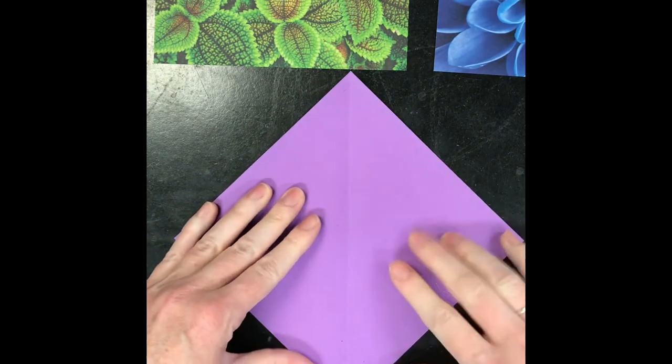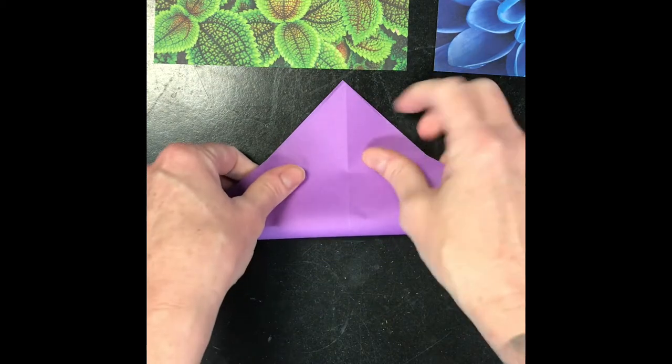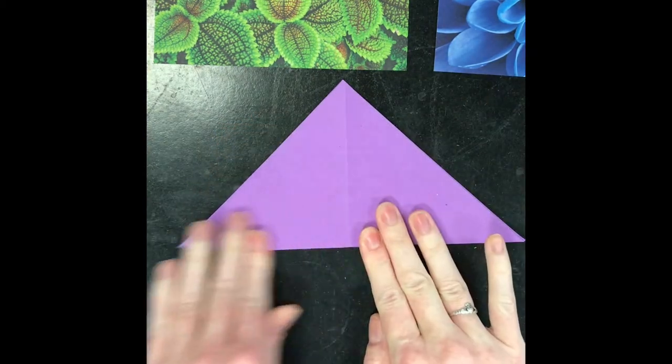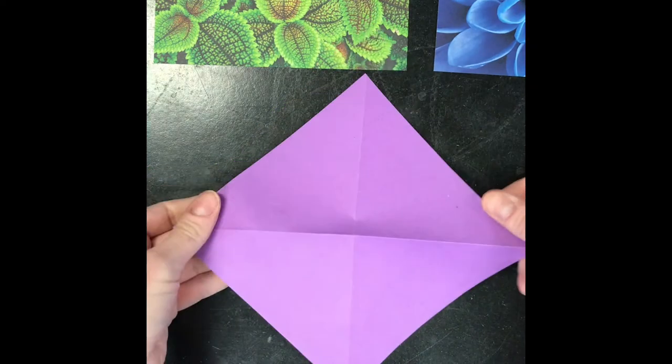We're going to turn it so that line runs down the middle, and again, bottom corner up to the top corner, which is going to leave you with kind of an X from corner to corner on your paper.